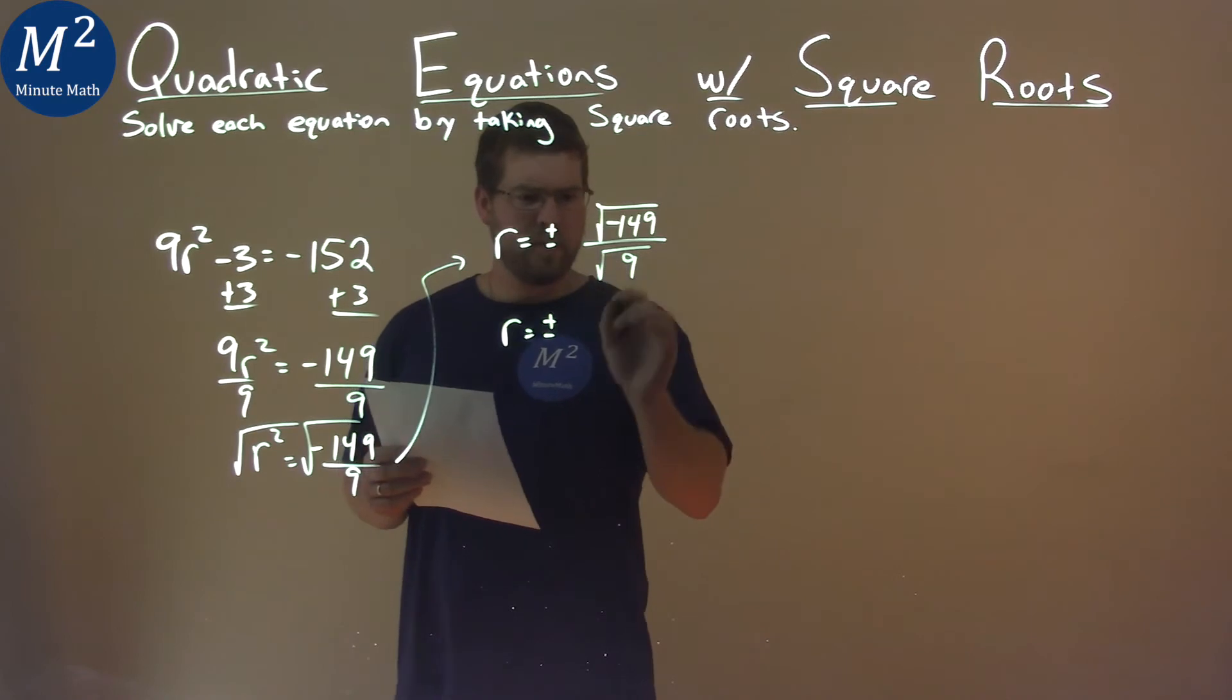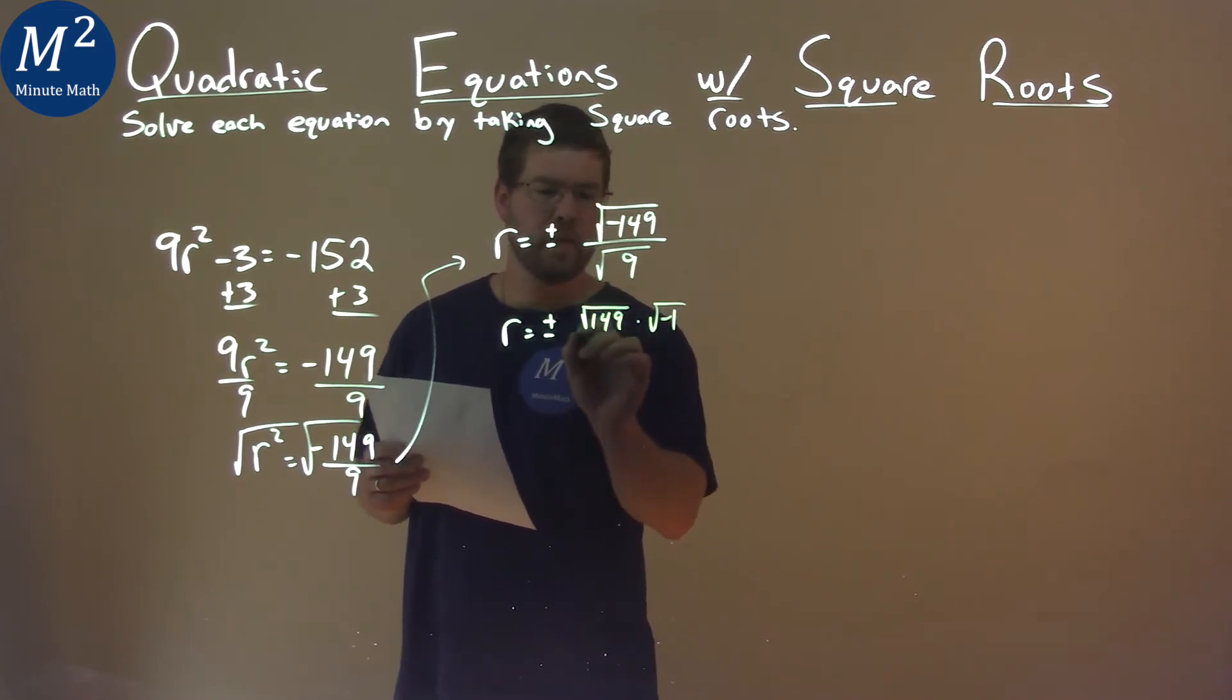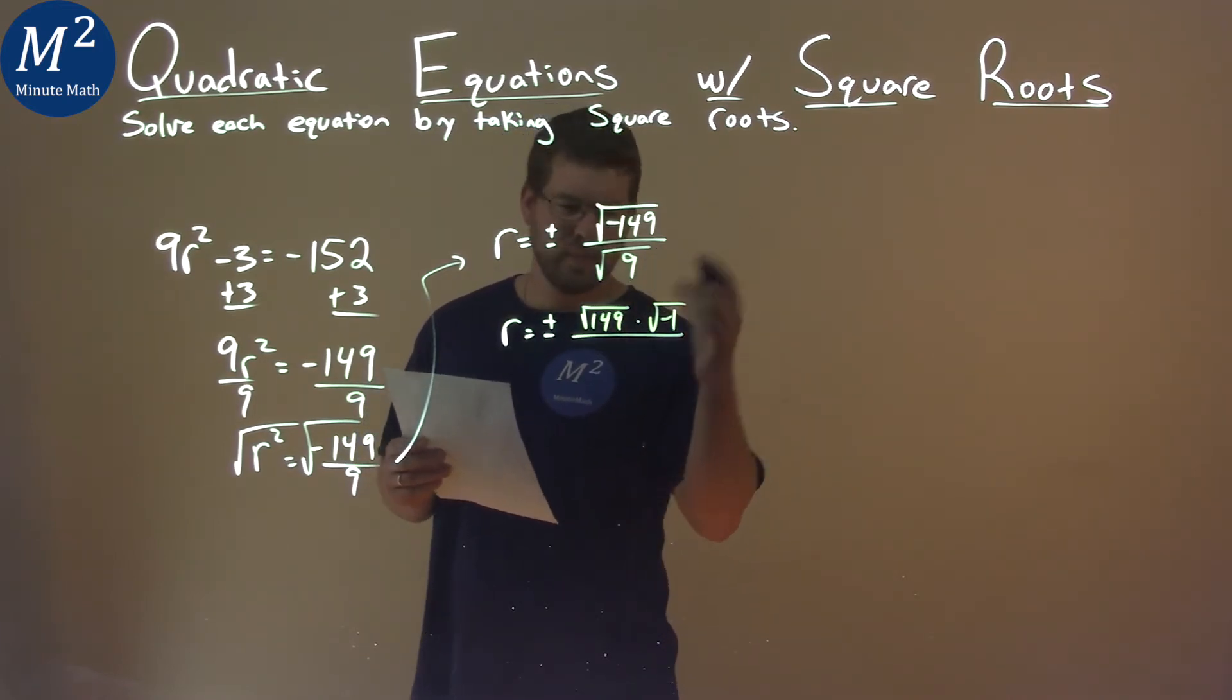The square root of negative 149 is the same thing as the square root of positive 149 times the square root of negative 1 over the square root of 9, meaning that to be 3.